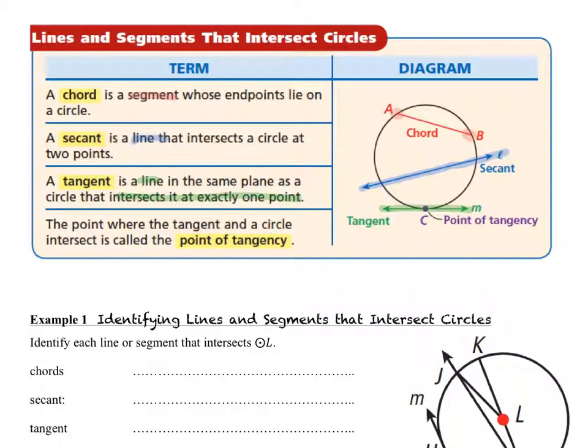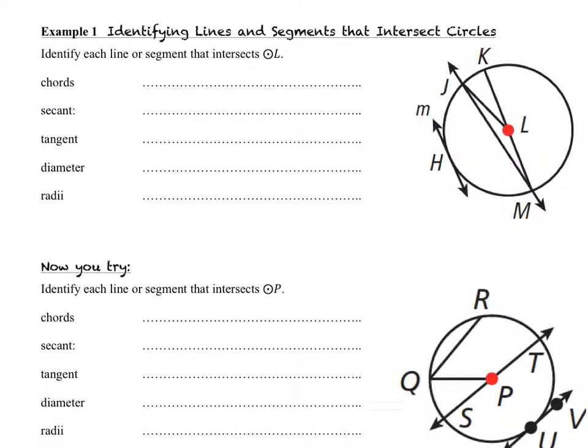The location where the tangent line intersects the circle is called the point of tangency. In example number one, we want to identify the lines and segment that intersect our circle, the circle with center L.